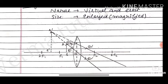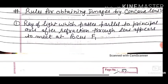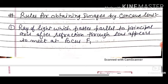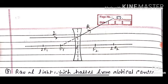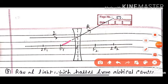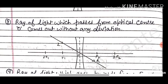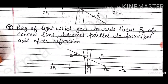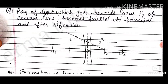Now the rules for obtaining images by a concave lens: First, a ray parallel to the principal axis after refraction appears to meet at principal focus F1 — they appear to meet because they diverge after refraction. Second, a ray through the optical center goes straight without deviation. Third, a ray directed obliquely towards focus F2 becomes parallel to the principal axis after refraction.